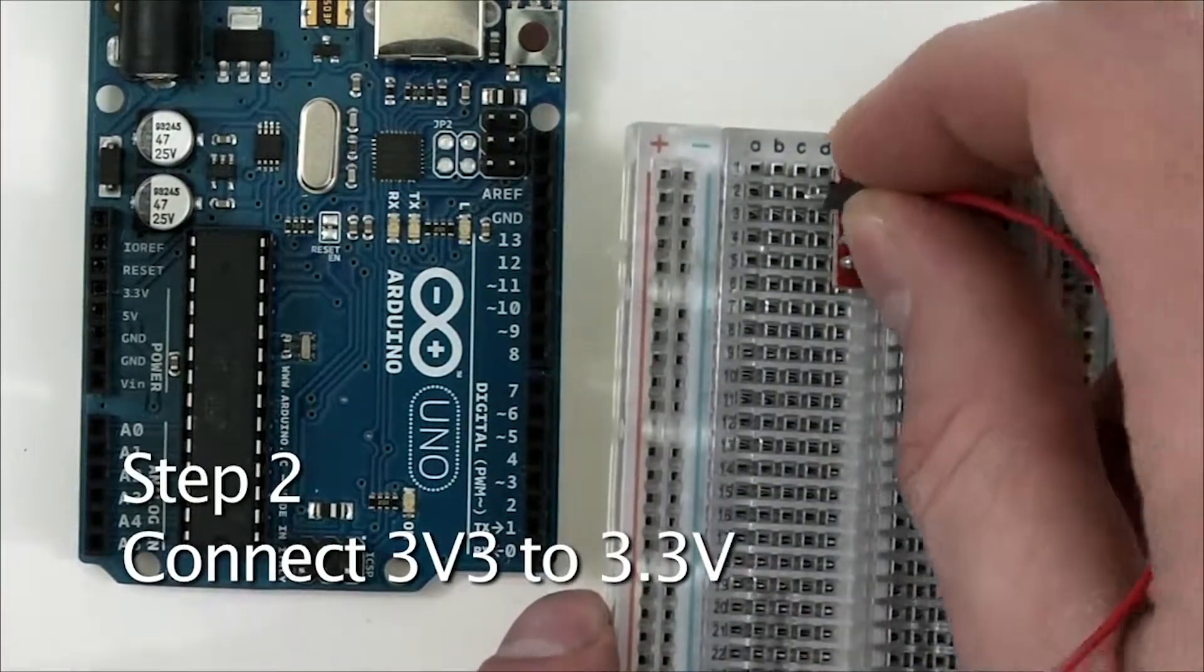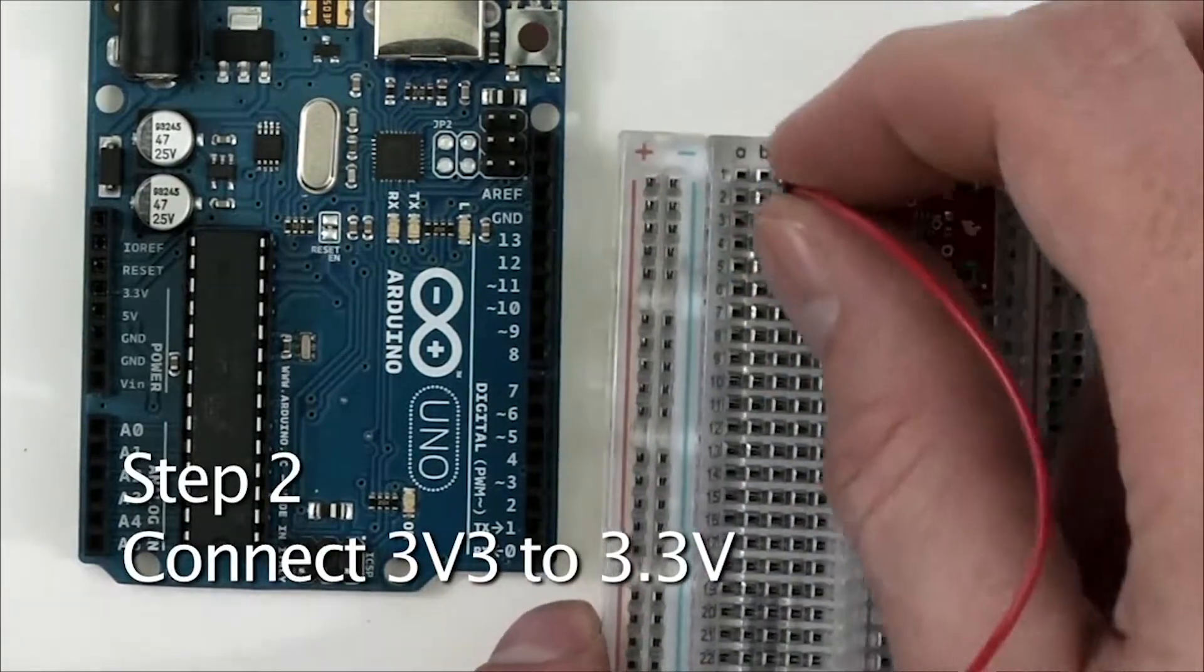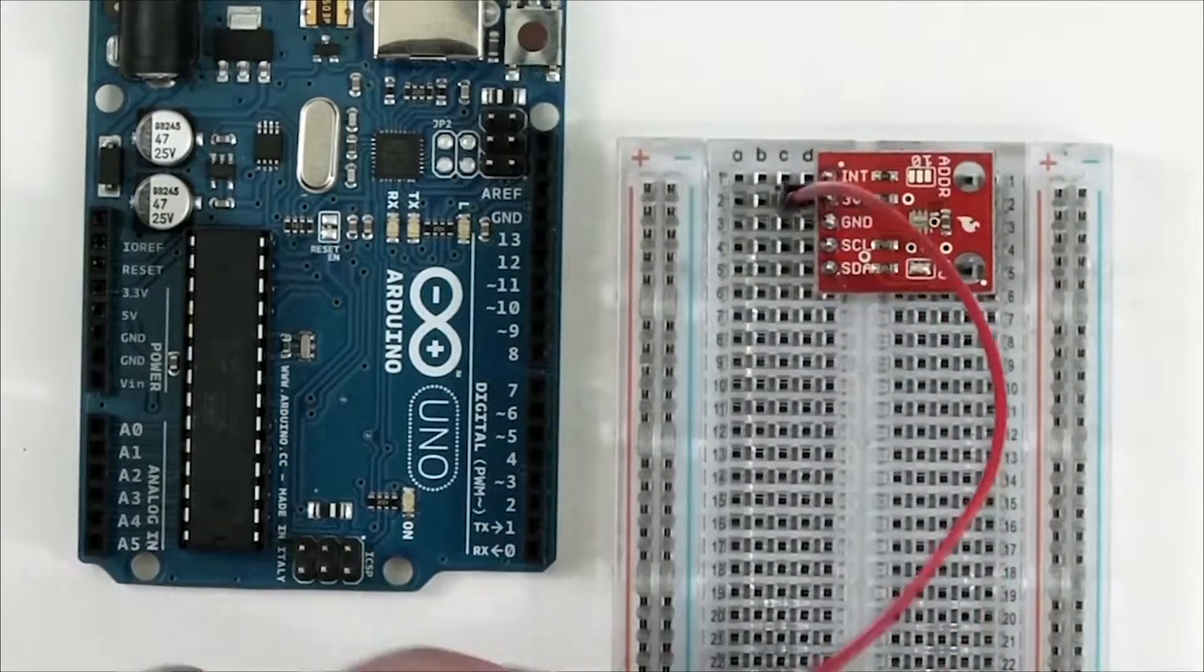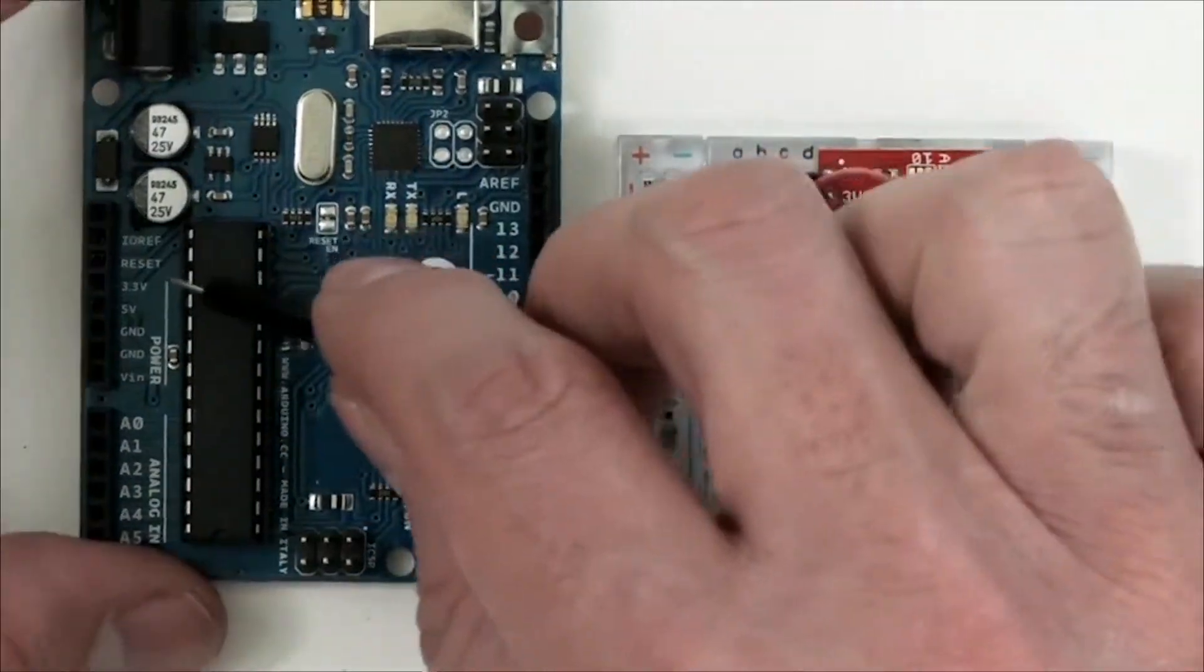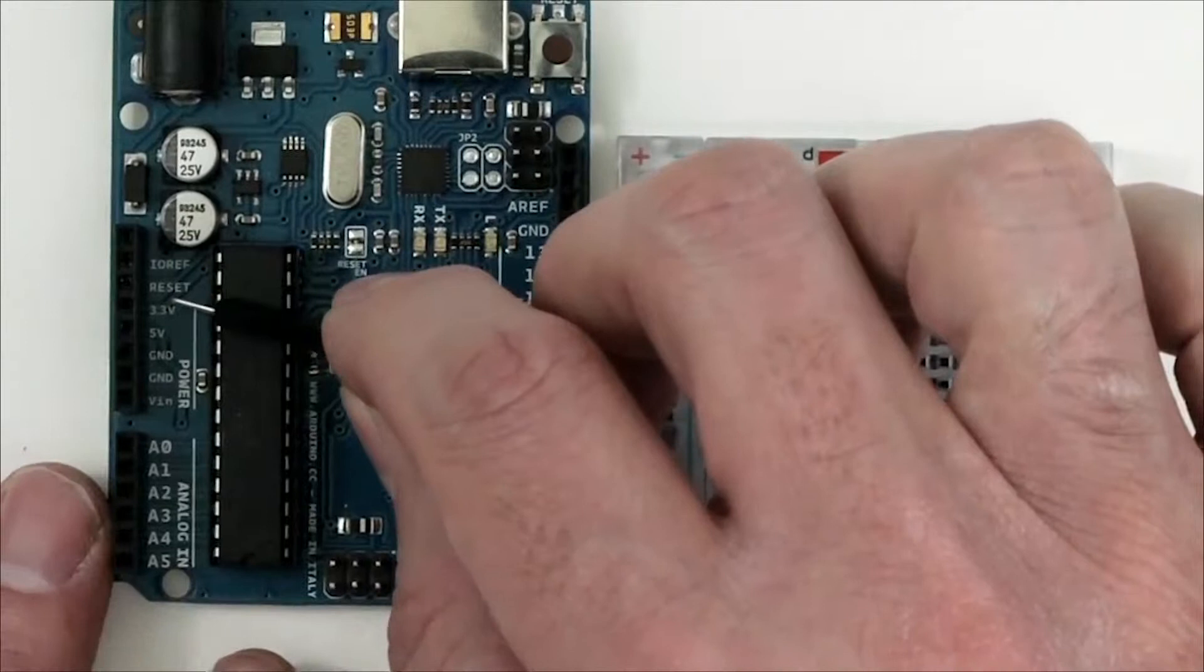Then grab a jumper wire and plug one end into row number two on the breadboard so that we can connect 3V3 to the 3.3 volt on the Arduino.